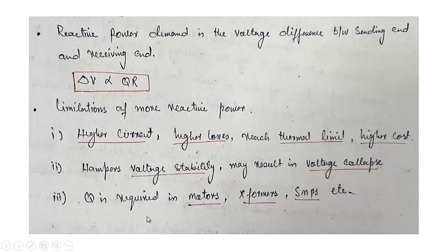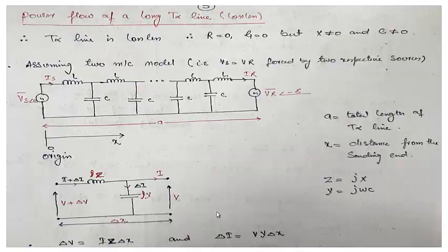Q is required in motors, transformers, SMPs, etc. These are required to run them, otherwise they will not perform satisfactorily. Now let us discuss the power flow of the long transmission line. In this case, it is similar to what we have done earlier, but here we have not neglected the capacitance — we have to include the capacitance as well.